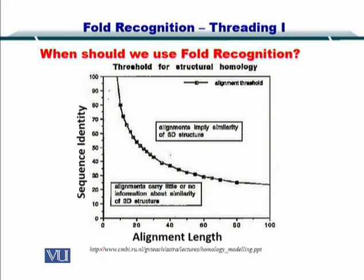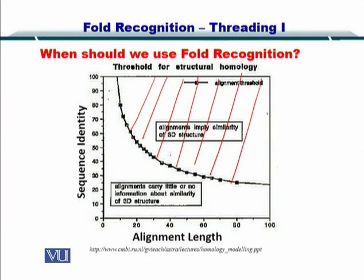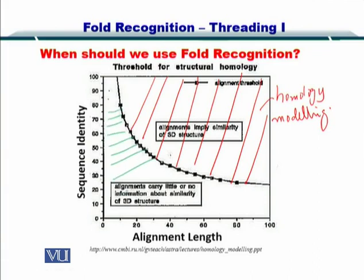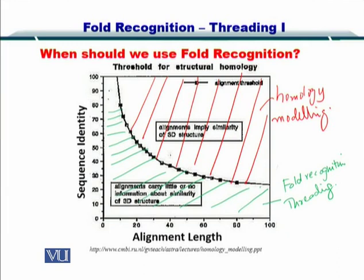So why should we use fold recognition or threading? If you remember the graph, it had two portions. One portion is where homology modeling is very helpful in predicting the structure. But if your sequence identity and alignment fall in the lower range, then you go for fold recognition or threading. Earlier we were talking about the red region for homology modeling, and now we are talking about this lower portion.